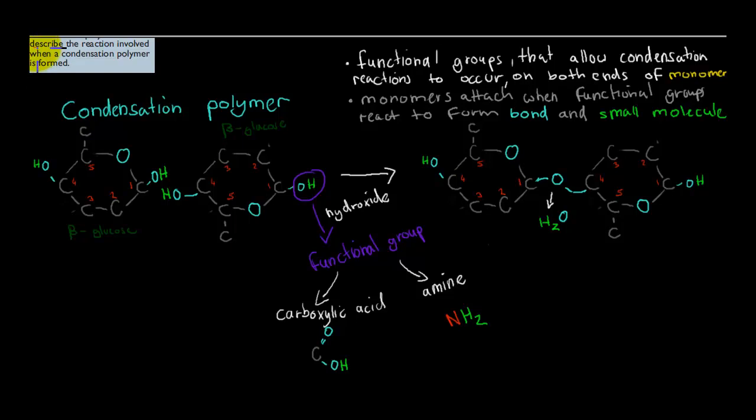Now it says describe the reaction involved when a condensation polymer is formed. So last time we explained, this time we describe. All we have to do in this case is describe each monomer. These are the beta-glucose monomers, each of these is a monomer. And they have functional groups on either end. These functional groups have to be either hydroxide, which is the OH groups, or it could be carboxylic acid, which is this one here, or amine group, which is this one here.